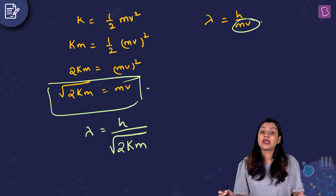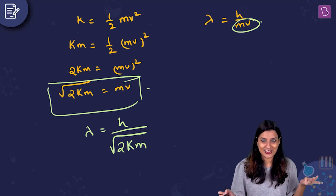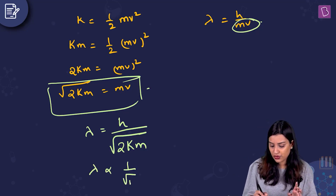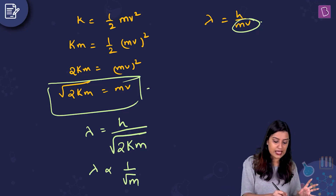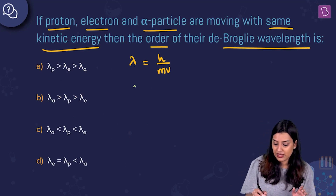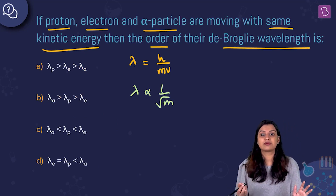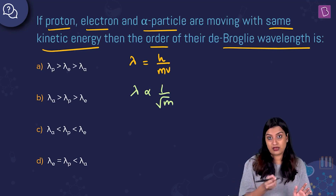Since kinetic energy K is the same for all three particles, and h is Planck's constant (also fixed), we get λ ∝ 1/√m. So the de Broglie wavelength is inversely proportional to the square root of mass. We now need to establish the order of masses.